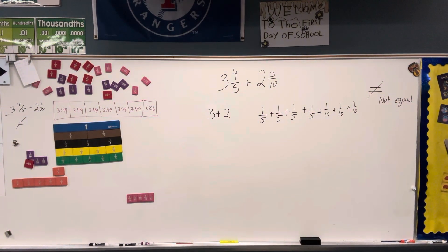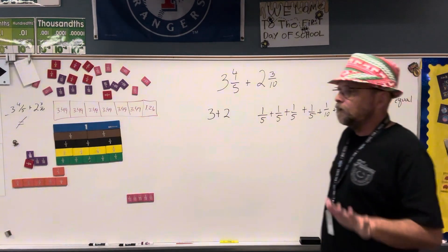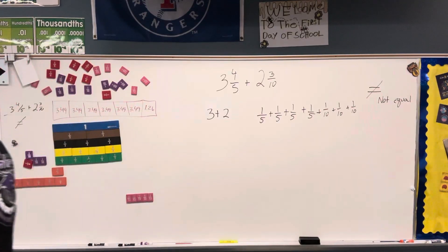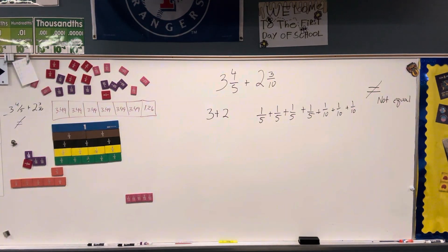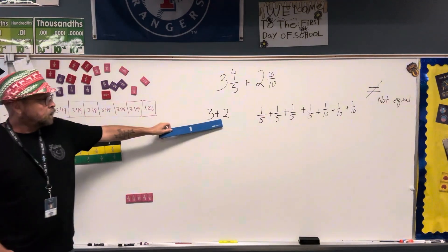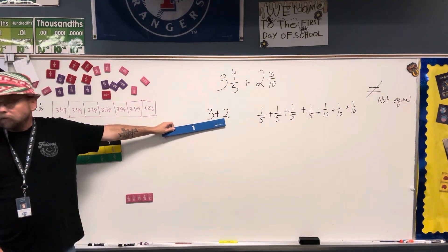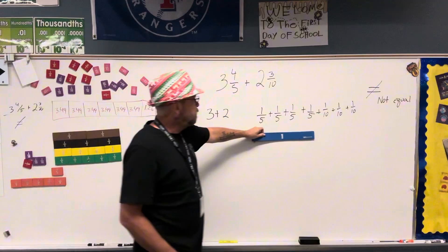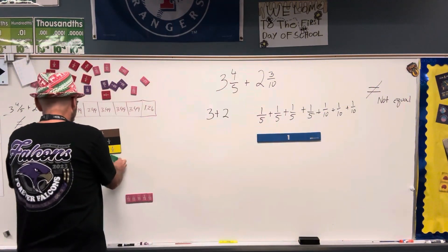Now a lot of what we're working on today is going to be adding fractions with unlike denominators. So I know I've added the whole numbers, so I'm not worried about them right now. But I have to add 4 fifths plus 3 tenths.